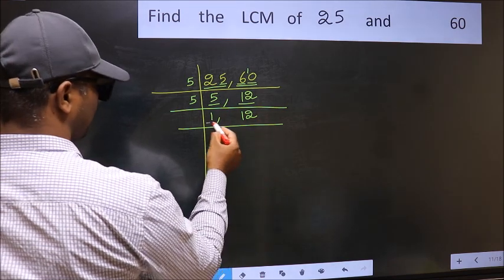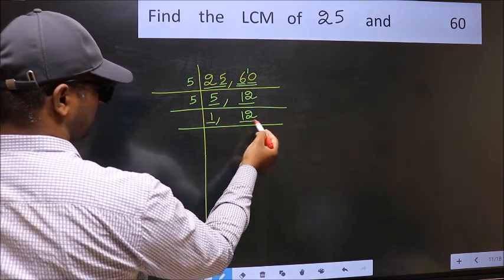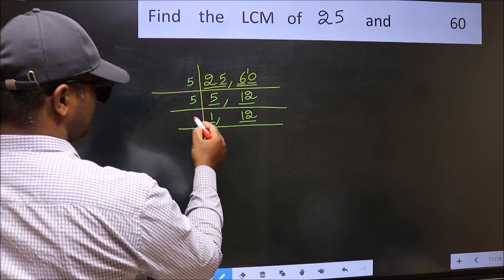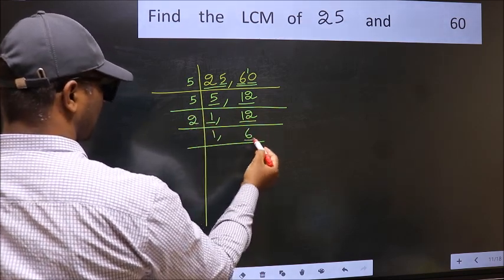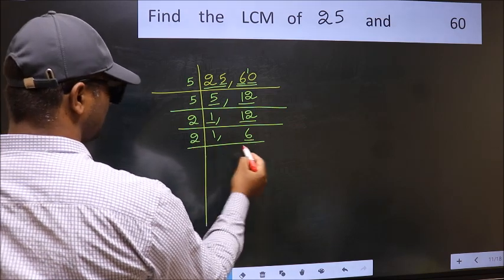Now we got 1 here, so focus on the next number, 12. 12 divided by 2 is 6. Now we have 6. 6 divided by 2 is 3.